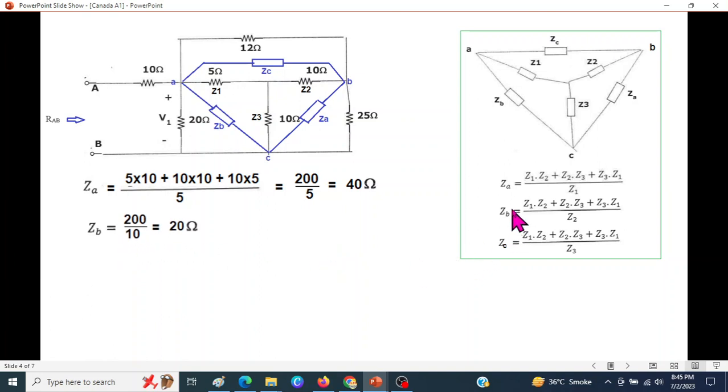Now you can see for ZB and ZC, the numerator is same, only denominator is changing. We will also write here 200, and the denominator should be Z2, which is 10 ohm, so the answer is 20. Similarly, for ZC, the numerator is same and the denominator is Z3, which is 10 ohm, so this is also 20.